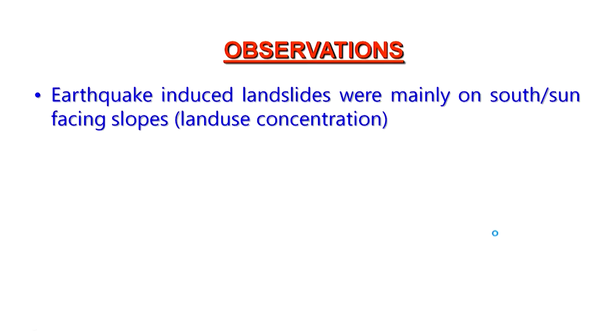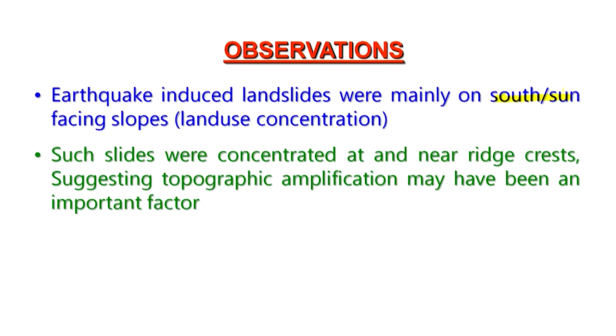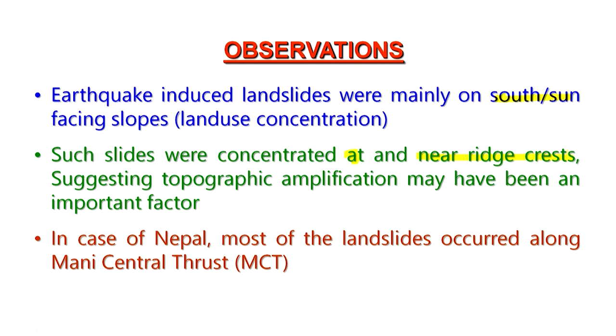A mid-stage observation: earthquake-induced landslides generally occur on the southward, south-facing slopes, because most land use concentration is on that part, human interventions are also there, and heating and cooling effects also occur on south-facing slopes. These earthquake-induced landslides have originated near or at the ridge crest — the top of the hill or mountain — which suggests topographic implications may have played a very important role. This is one common observation seen in most of these earthquakes.